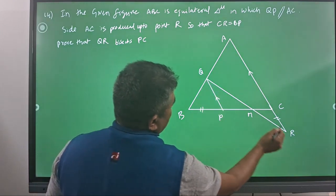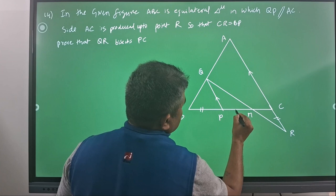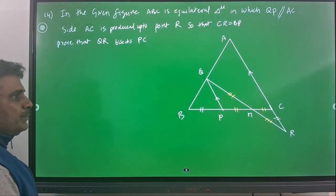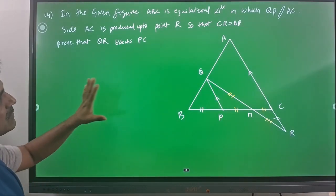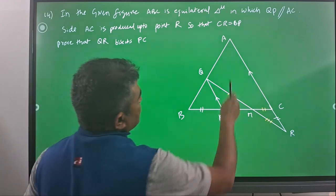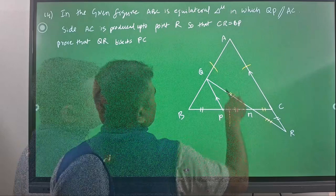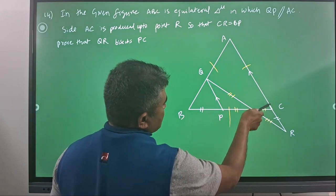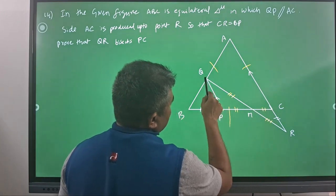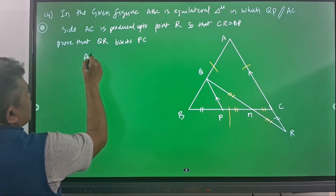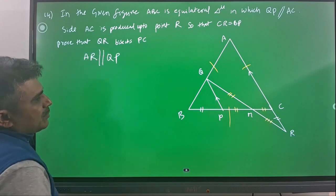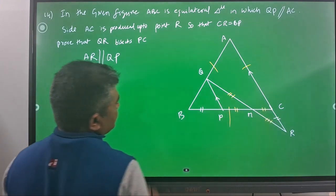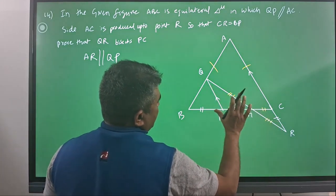So, we need to show that the midpoint segments are equal — that is what we need to prove. The given information: ABC is an equilateral triangle, so all sides are equal. AC is parallel to QP, and AC is produced to R, so we can say AR is parallel to QP. It is also given that CR is equal to BP, and we need to prove QR bisects PC.